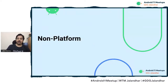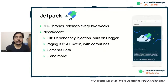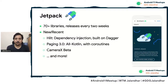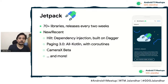On the non-platform side, Jetpack now has 70 libraries. New developments include Hilt — an extension of Dagger that lets you set up dependency injection with less boilerplate code — Paging 3.0 with coroutine support, and CameraX which is now in beta. A lot of libraries are being released every two weeks.